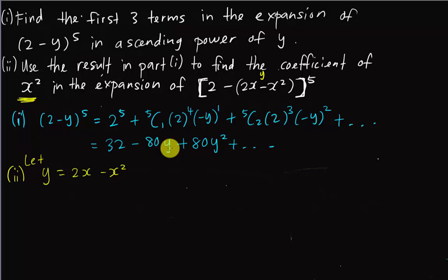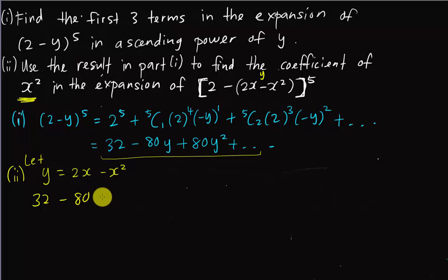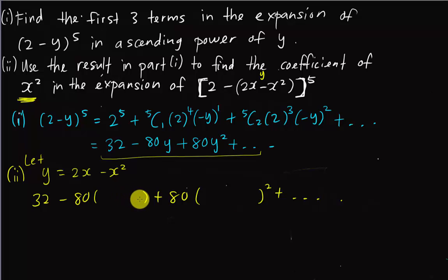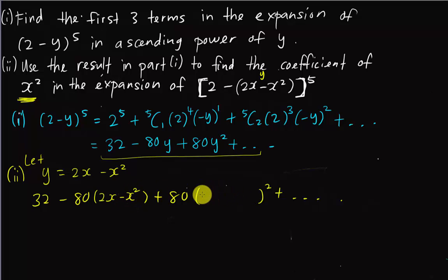I copy down the part 1 expansion: 32 - 80(y) + 80(y)². I leave brackets because I'm going to substitute y = 2x - x² into each bracket. So substituting: y becomes (2x - x²).